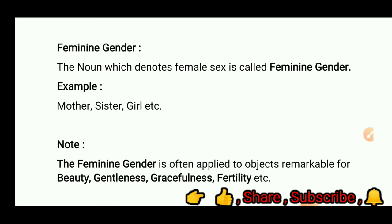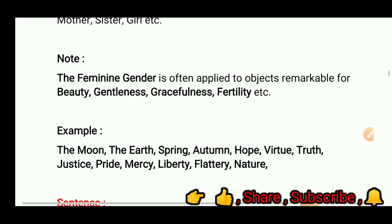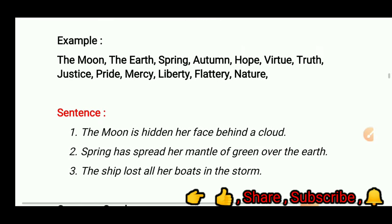Feminine gender: the noun which denotes female sex is called feminine gender. For example, mother, sister, girl, etc. Note: the feminine gender is often applied to objects remarkable for beauty, gentleness, gracefulness, fertility, etc. For example, the moon, the earth, spring, autumn, hope, virtue, truth, justice, pride, mercy, liberty, flattery, and nature.